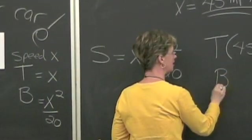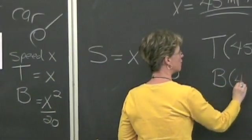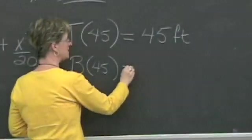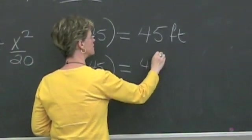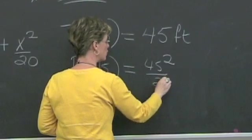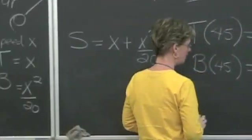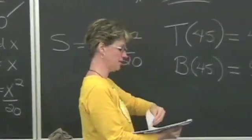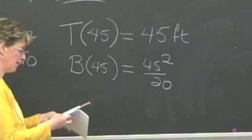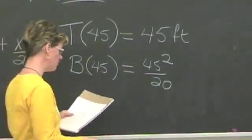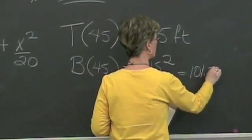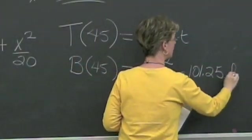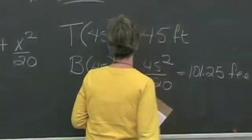Now let's see what the braking distance of 45 miles per hour would be. The braking distance would be 45 squared over 20. So 45 squared over 20. See it right over here. It's going to give me 101.25. 101.25 feet.